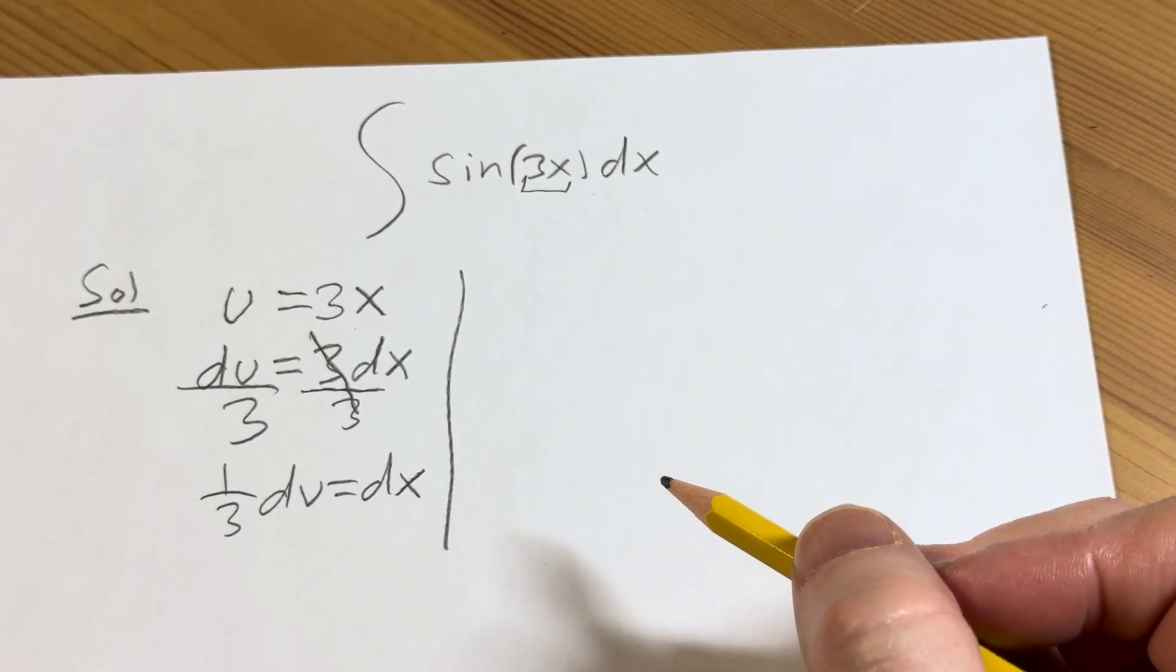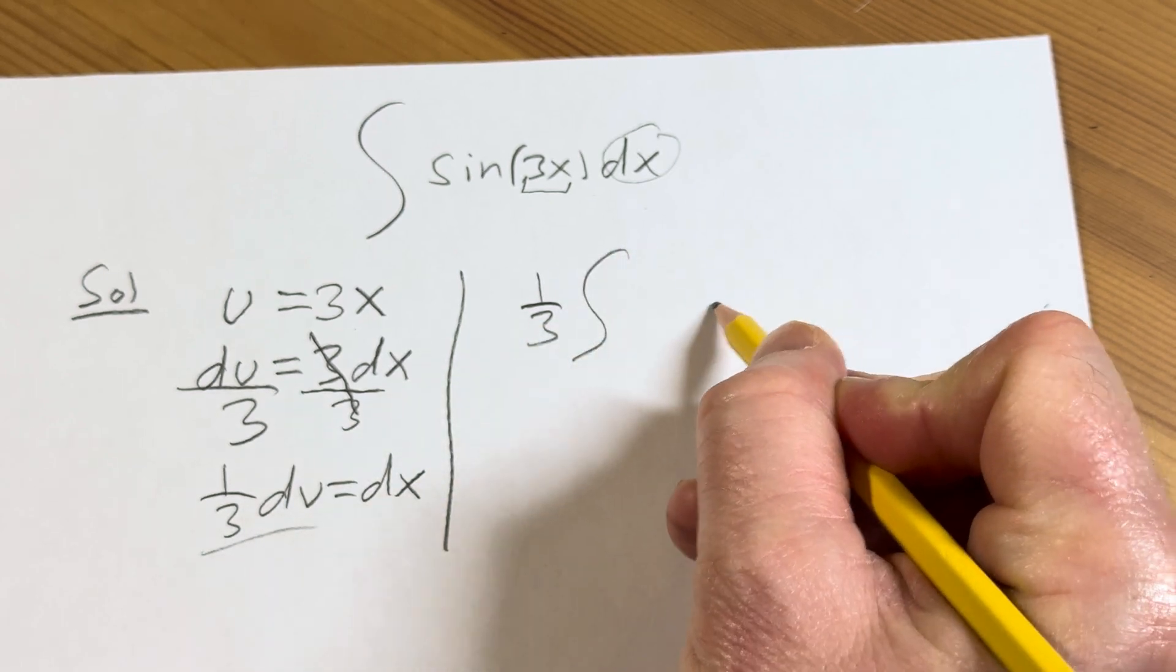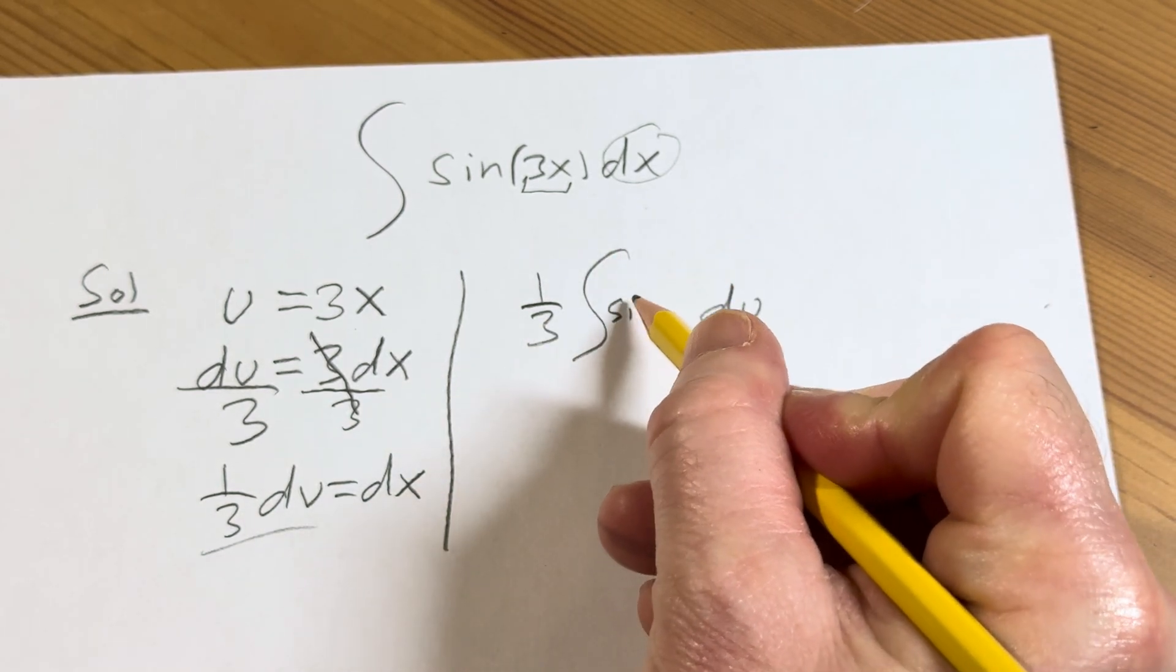And now we're in a position to make the substitution. Our dx is going to be 1/3 du. And then we're just left with the sine of u.